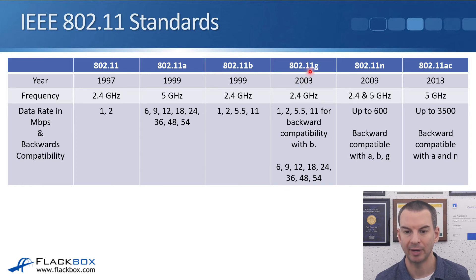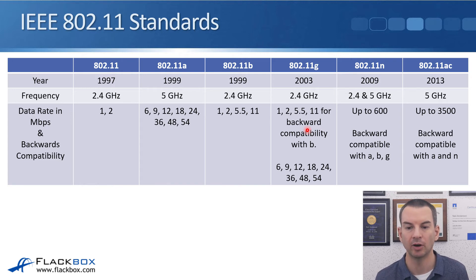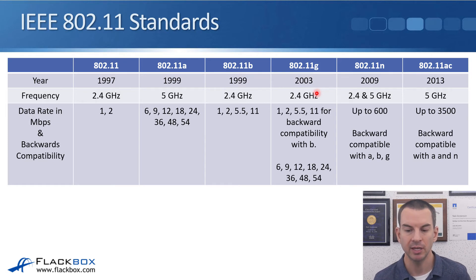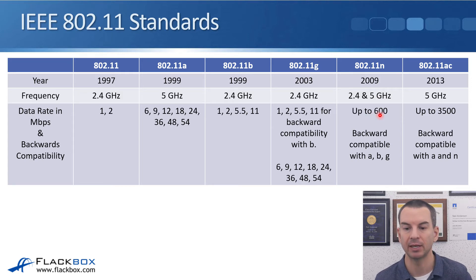In 2003, 802.11g came out, also operating at 2.4 GHz, which makes it backwards compatible with 802.11b. 802.11a is 5 GHz, so A and G are not compatible with each other. With backwards compatibility, older devices supporting only 802.11b could still operate up to 11 Mbps, while newer devices supporting 802.11g could reach 54 Mbps. In 2009, 802.11n came out, capable of operating at both 2.4 and 5 GHz, with a big speed improvement up to 600 Mbps, and backwards compatible with A, B, and G.